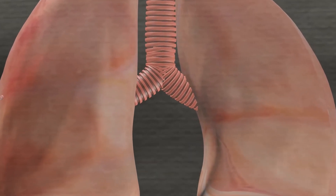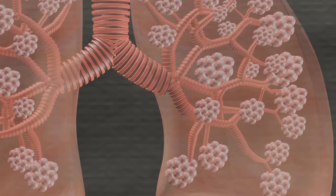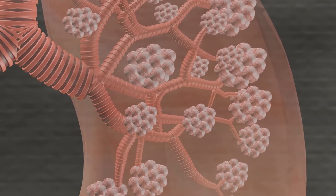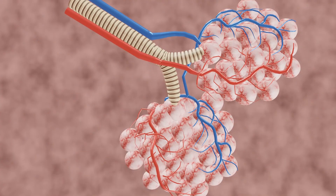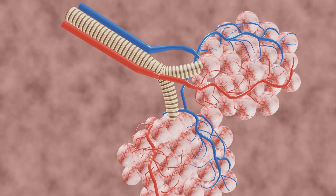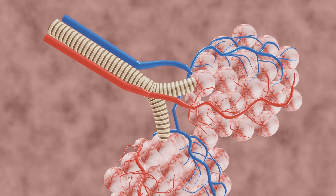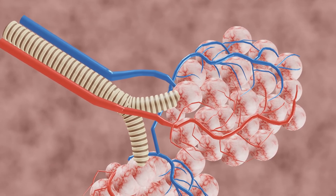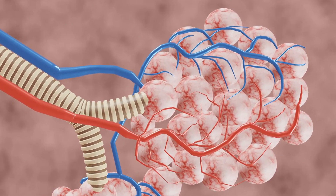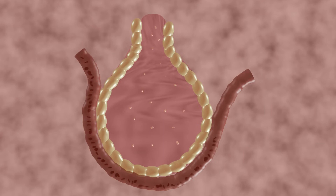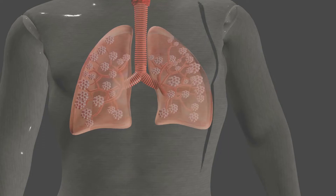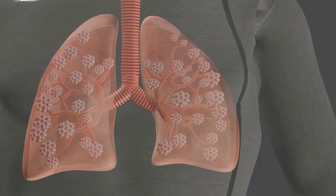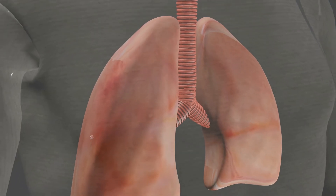Each bronchus on entering the lung divides into bronchioles. The bronchioles continue to divide and subdivide deep into the lungs and finally open into a large number of air sacs. The air sac is the functional unit of the lungs, consisting of several microscopic single-layered structures called alveoli. Overlying the alveoli is a rich network of blood capillaries, providing an excellent site for the exchange of gases. Lungs are spongy because of the presence of millions of alveoli.